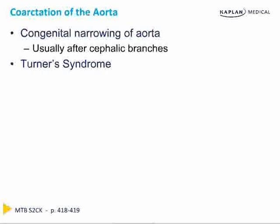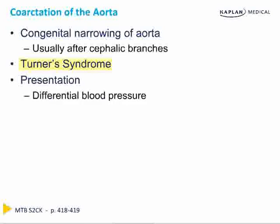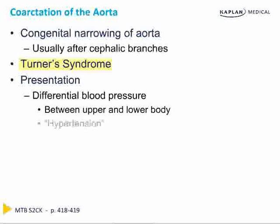Coarctation of the aorta is associated with Turner syndrome — commonly tested on step one, two, and three. Think: female with amenorrhea, webbed neck, short stature, and elevated blood pressure in the upper extremities — think Turner syndrome and coarctation. The presentation is differential blood pressure between upper and lower body: the coarctation occurs after the cephalic vessels branch off the aorta, leading to elevated pressures in both arms and lower pressures in the legs. Blood pressure in the legs is not routinely checked, so if you are checking it, you're already suspicious of a coarctation.